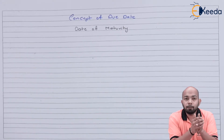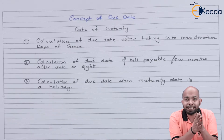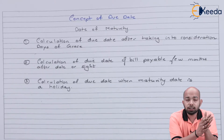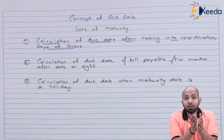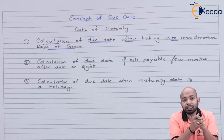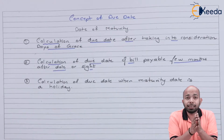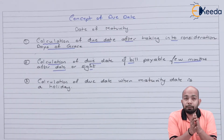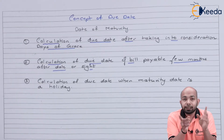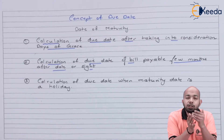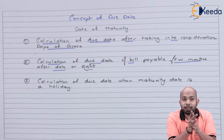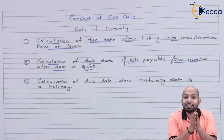There are basically three situations we have to deal with whenever we calculate the due date. The first situation refers to calculation of due date after taking the days of grace into consideration. The second situation is where you have to calculate the due date of a bill which is payable few days or few months after date or after sight. After date and after sight are two distinct things we'll explain.